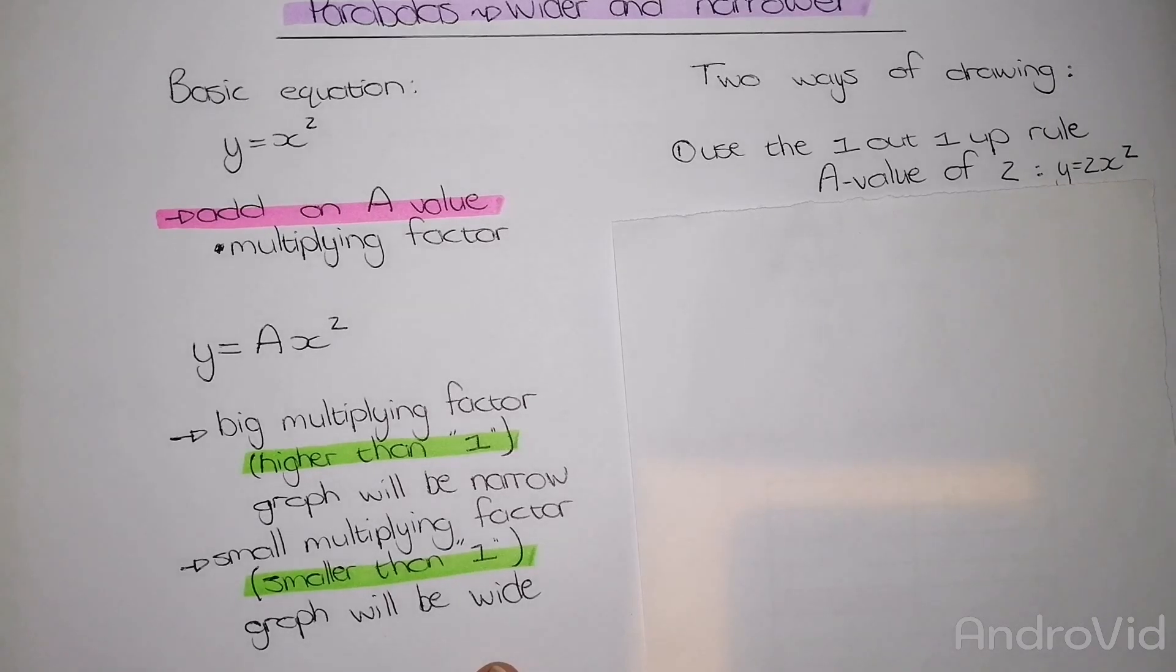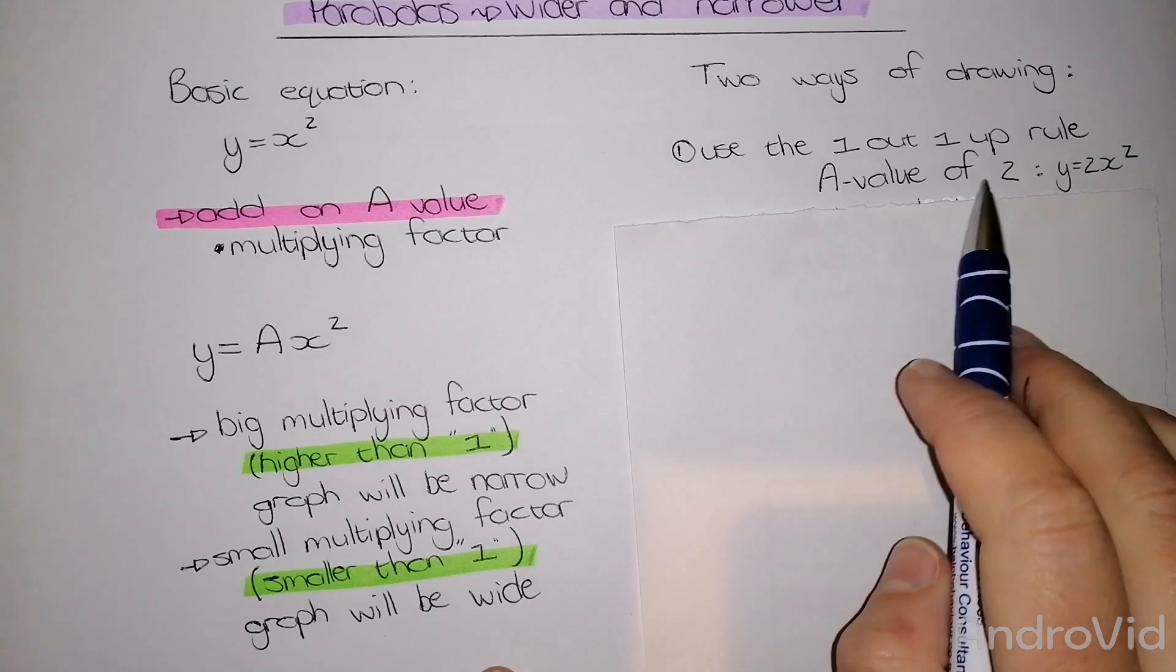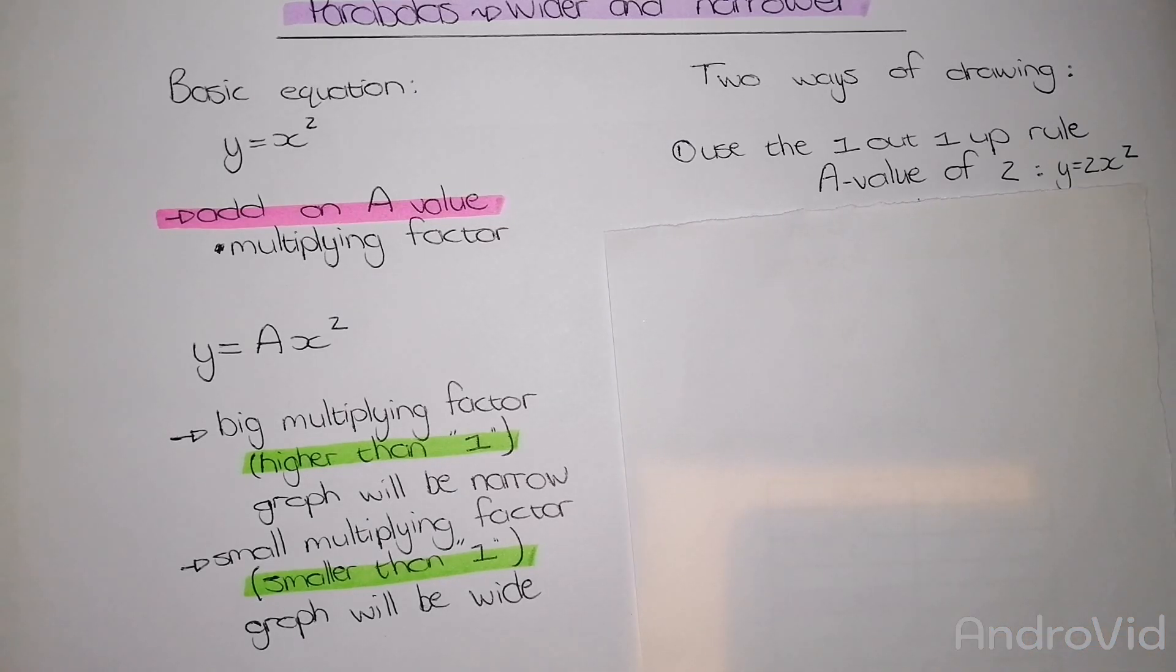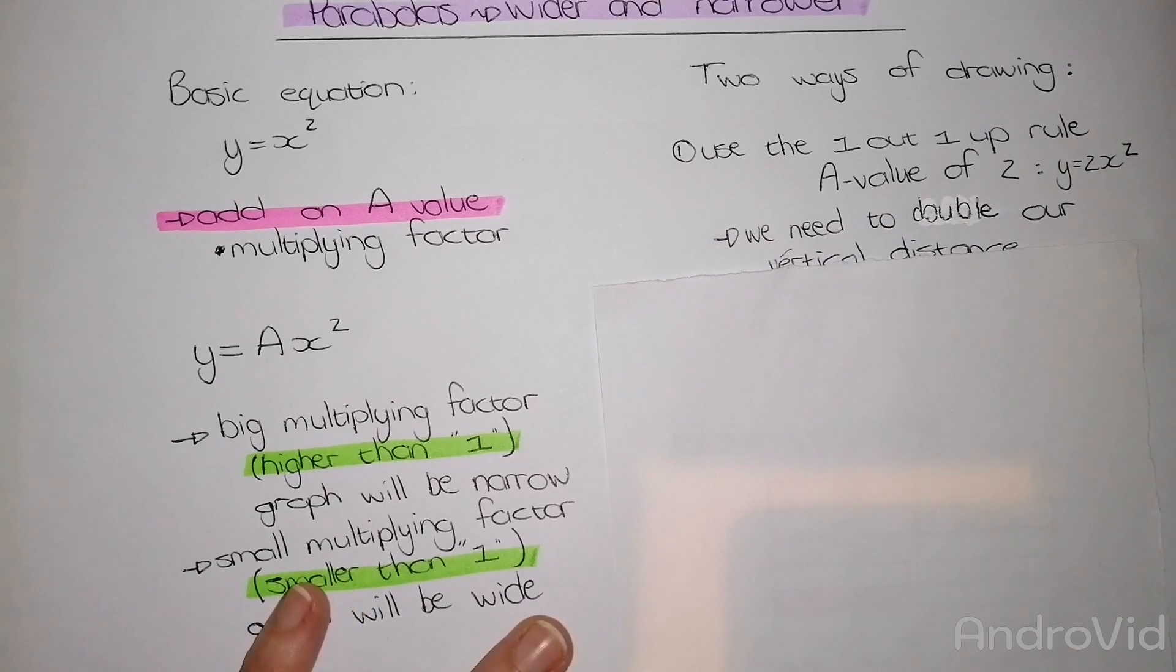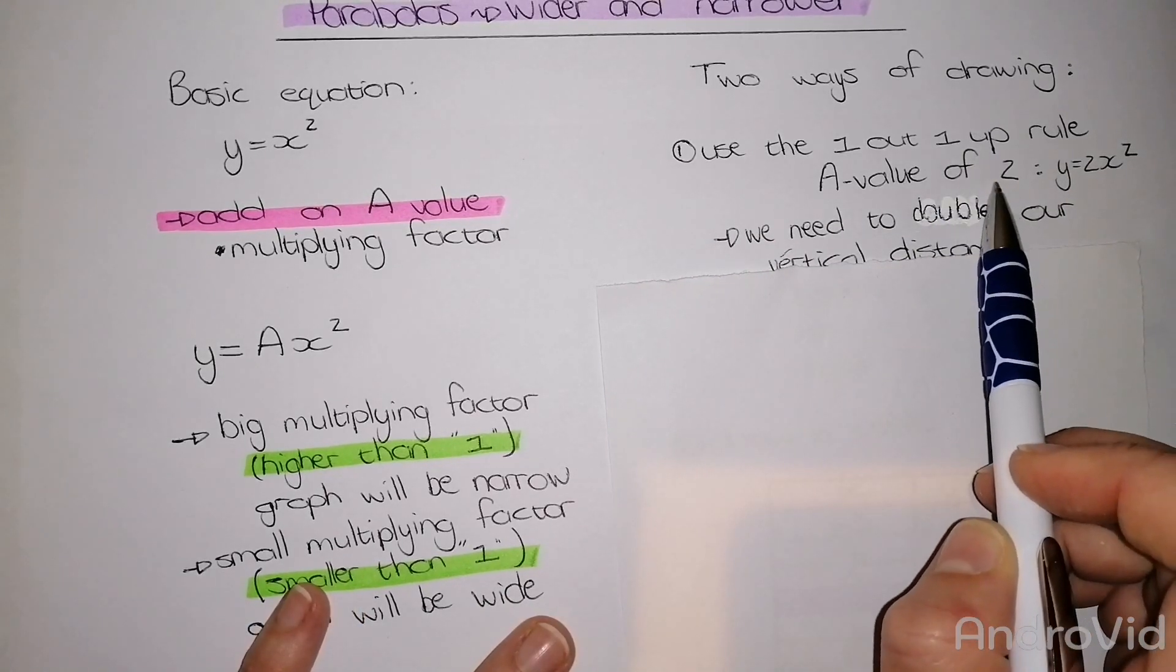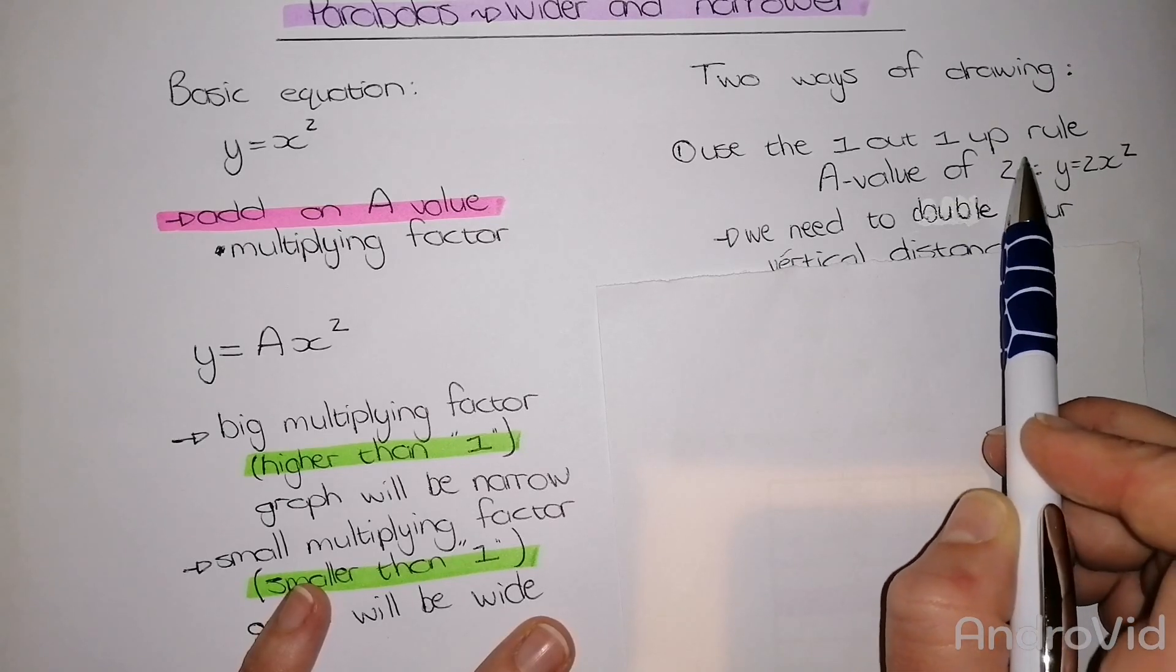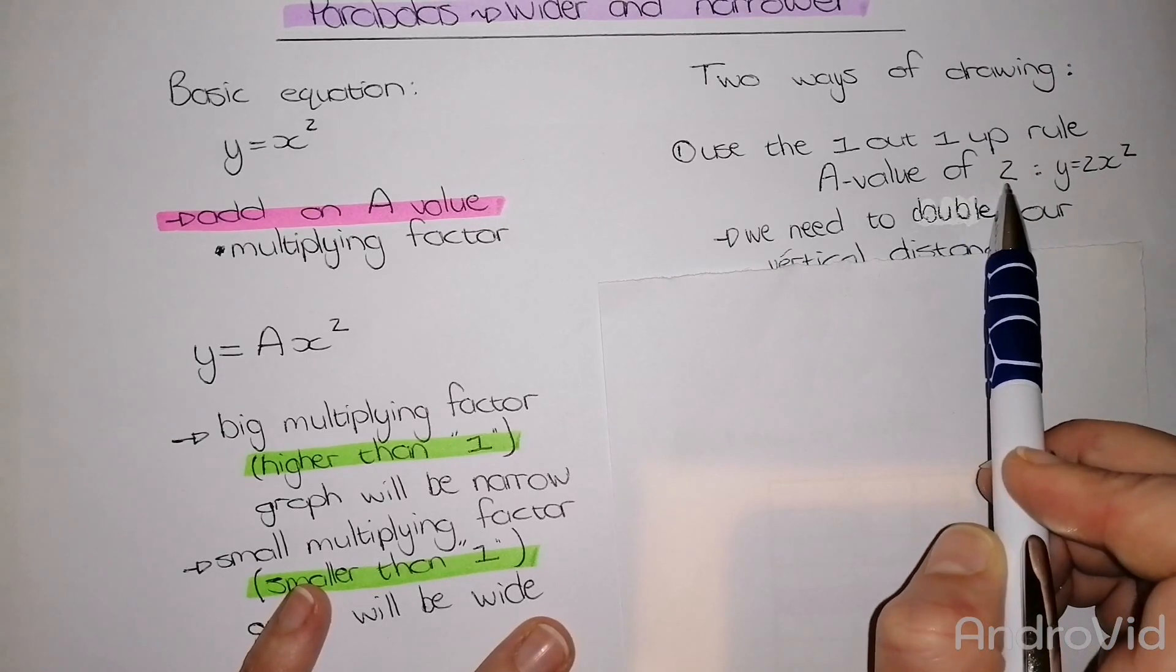If we use an a value of 2, my equation will read y equals 2x squared. The way we use this 1 out 1 up rule to draw this new parabola is we need to double our vertical distance because my a value is 2. Doubling meaning multiplied by the new a value.